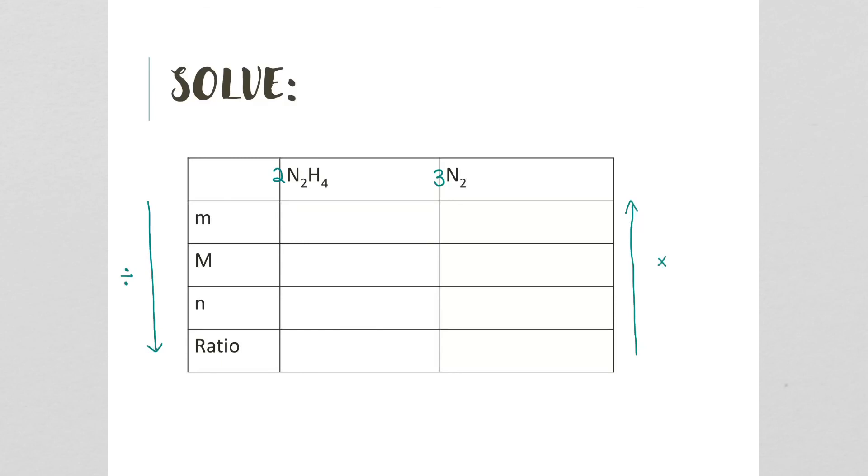Our mass of N2H4, we were told that it's 150.0 grams. Now if we figure out the mass of N2H4, it's 14.01 times 2 plus 4 times 1.04. That equals 32.06 grams per mole.